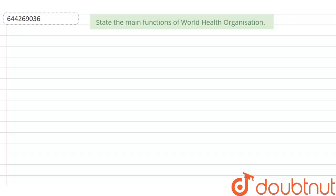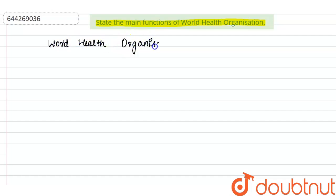The question is: state the main functions of the World Health Organization. The World Health Organization, also called WHO in short form, is concerned with the following functions.